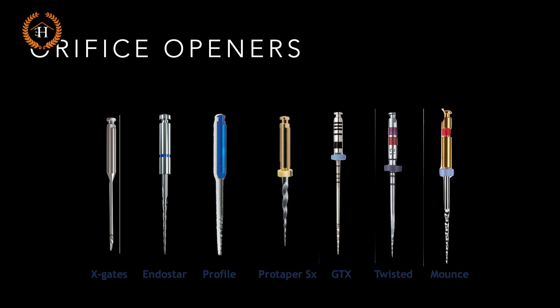To perform this task, many options have been advised. Commonly they are termed as orifice openers — conventionally Gates Glidden and Peeso reamers were used, but now we have moved on to nickel-titanium systems, and each company makes their own orifice opener, apart from the shapers or finishers in the particular system.